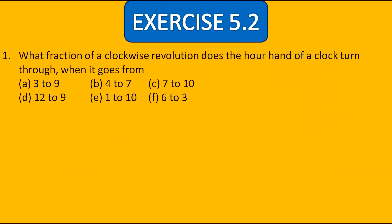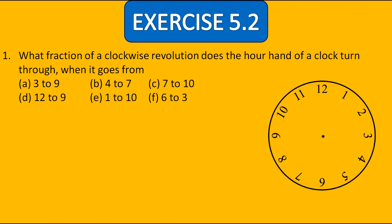Here is the first question: What fraction of a clockwise revolution does the hour hand of a clock turn through when it goes from 3 to 9, 4 to 7, 7 to 10, 12 to 9, 1 to 10, and 6 to 3? For this we need a clock. The hour hand was first on 3 and now it reached on 9, so it is making half of a revolution, which means two right angles. So the answer for A is half, or we can say two right angles.